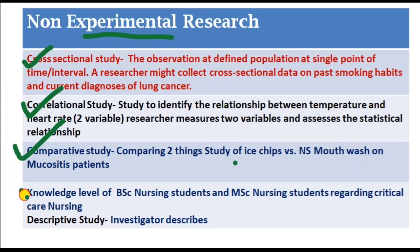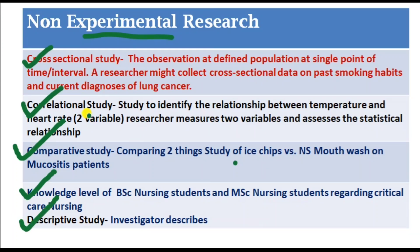A comparative study compares two groups — for example, the knowledge level of BSc nursing students and MSc nursing students regarding critical care nursing. A descriptive study is one where the investigator describes the phenomena. These are the examples of non-experimental research: cross-sectional, correlational, comparative, and descriptive studies.